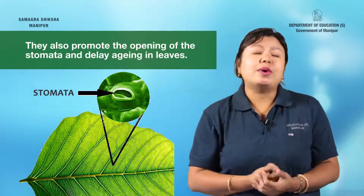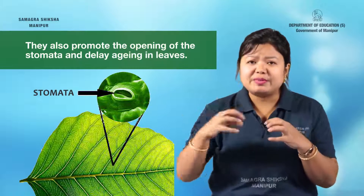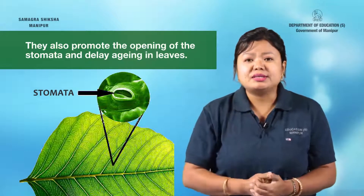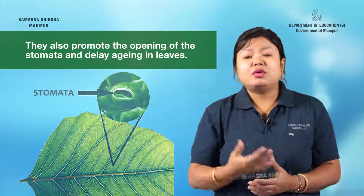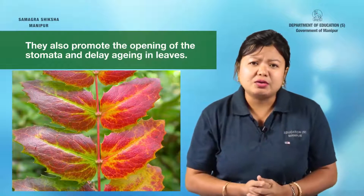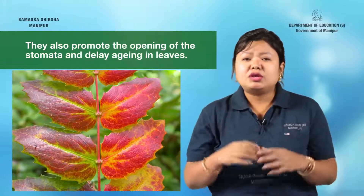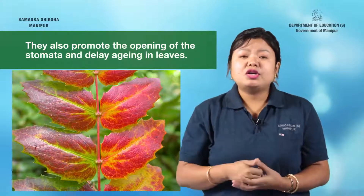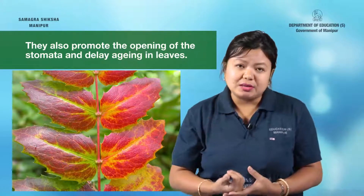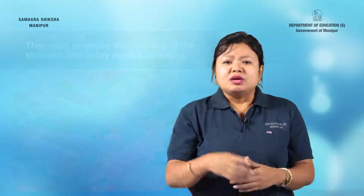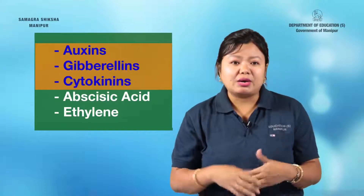Cytokinins also promote the opening of stomata. They help in delaying the aging of leaves — if leaves begin to show yellowish color changes, cytokinins can delay that aging process. These are the growth promoters.